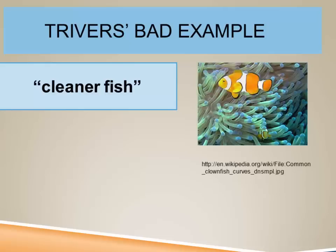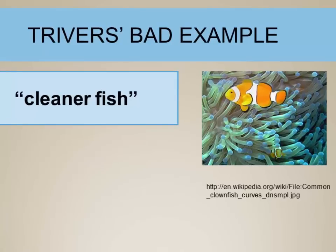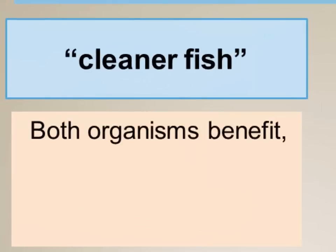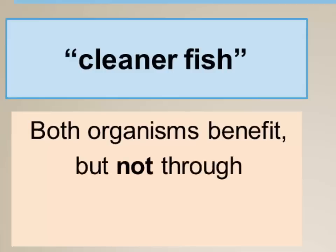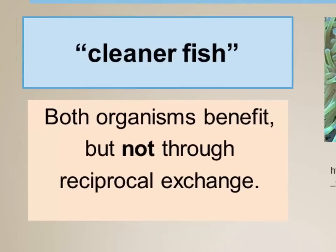This is a Wikipedia illustration of a clown fish cleaning the tentacles of a sea anemone. The sea anemone gets its tentacles cleaned, which reduces infection that would harm its reproductive fitness. The cleaner fish gets protection from predators while in those poisonous tentacles, and it also gets some food. This is a symbiotic interaction — both organisms are benefiting — but they're not benefiting through reciprocity, so it's not a good example of reciprocity.